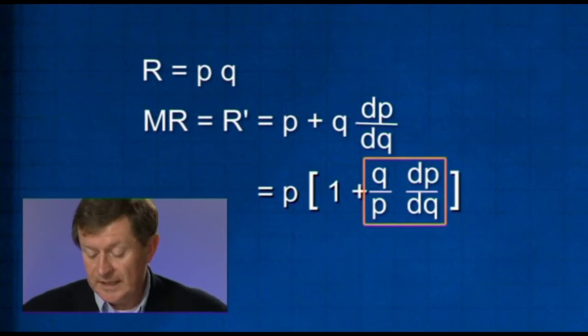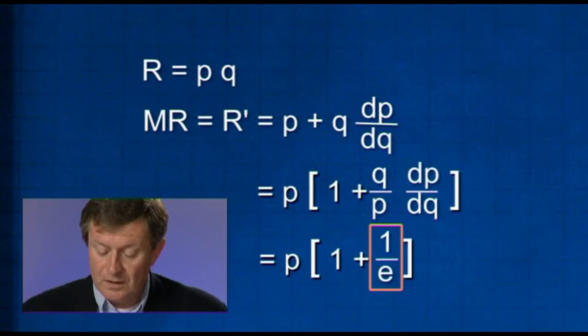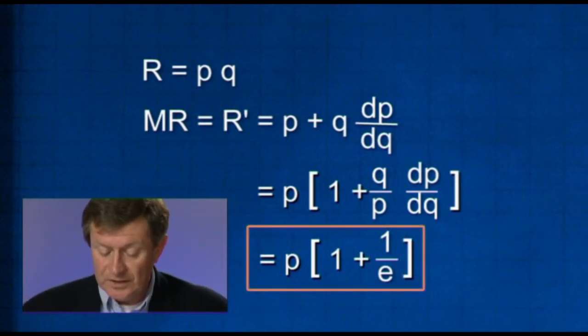And this expression here is the reciprocal of the elasticity. The elasticity of demand is dQ/dP times P over Q, so this is just 1 over E, the elasticity of demand. So this is the result we're going to make use of.